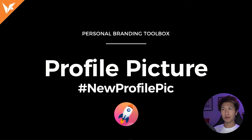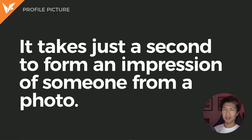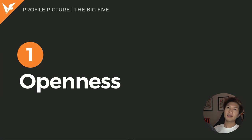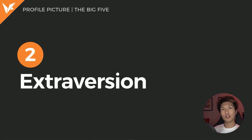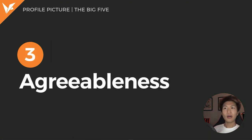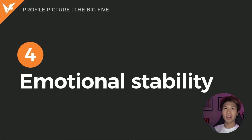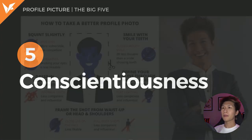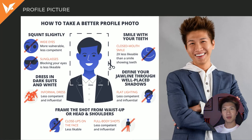Now I'd like to talk about profile pictures and first impressions. It takes just a second to form an impression of someone from a photo. Research in psychology has shown that first impressions are based on the Big Five unconsciously determined personality traits — the leading model of personality structure describing human personality in five dimensions. First, openness — how approachable is this person? Second, extroversion — is this person easy to talk to right away? Third, agreeableness — how does this person react in non-ideal situations? Fourth, emotional stability, sometimes contrasted with neuroticism. Fifth, conscientiousness — does this person have integrity and dedication to their work? Think about these Big Five traits and how you can best display them to your advantage.